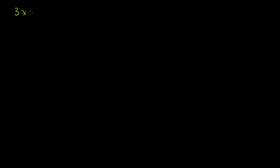Let's say we have 3x minus 4y is equal to 13. And let's say my other equation in my system is y is equal to negative 3x minus y. So this is in a strange form right here. I want to get it into standard form, and I'll do elimination for this system.